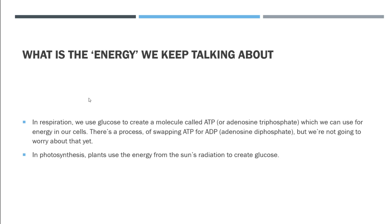A really quick side note: what is the energy we keep talking about? In respiration, we use the glucose to create a molecule called ATP — adenosine triphosphate. When I was in school I didn't learn about ATP until university. We use ATP for energy in our cells. There's a process of swapping ATP for ADP — adenosine diphosphate — it's about that one little tiny phosphate molecule. Don't stress too much about it. We use the energy from glucose to create the energy that our body uses, which is ATP. In photosynthesis, plants use energy from the sun's radiation to create glucose.